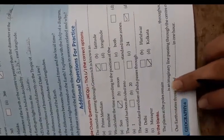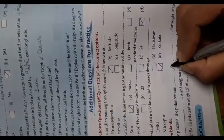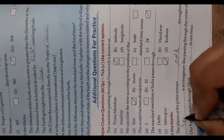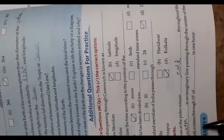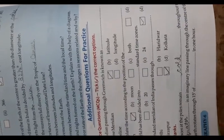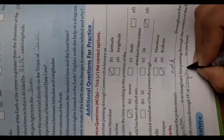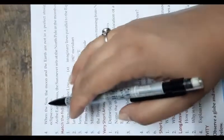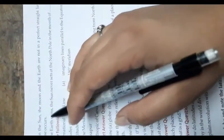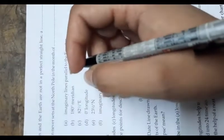Fill in the blanks: The places at the poles remain cold throughout the year — C-O-L-D. The equator is an imaginary line passing through the center of the Earth — E-Q-U-A-T-O-R. Our Earth rotates through 15 degrees of longitude in one hour — L-O-N-G-I-T-U-D-E-S. When the Sun, Moon, and Earth are not in a perfect straight line, a partial solar eclipse occurs — P-A-R-T-I-A-L S-O-L-A-R.